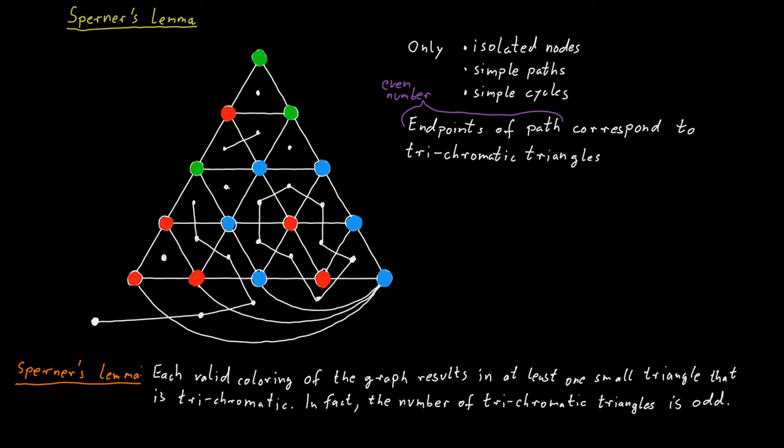Well, the mistake is that one endpoint of one of these paths does not actually correspond to a trichromatic triangle. Look at this artificial node that we added to the outside.